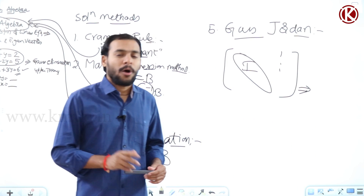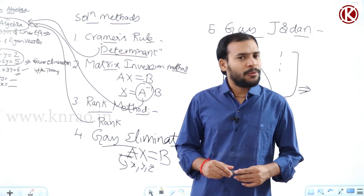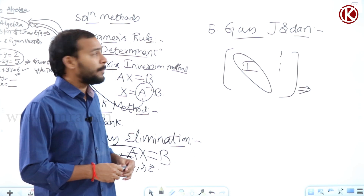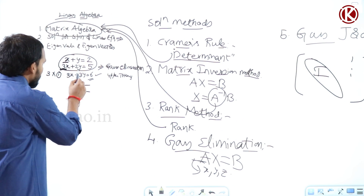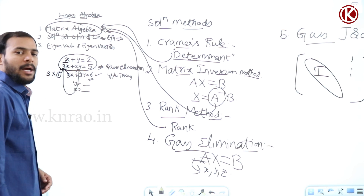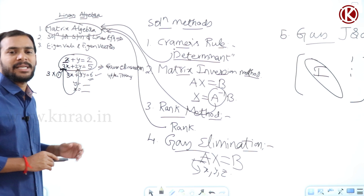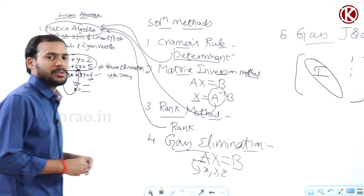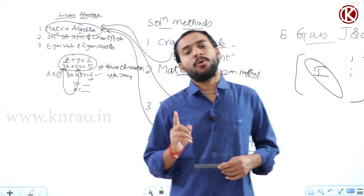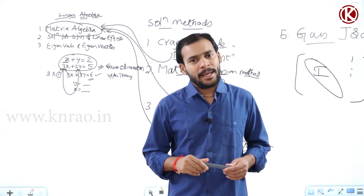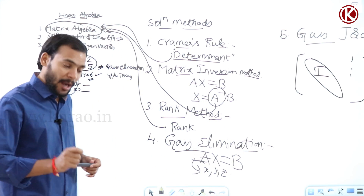In matrix algebra, we can apply both row and column operations, such as when finding determinants. However, when finding solutions for a system of linear equations, we must not perform any column operations. If we do, the coefficients of x and y get interchanged, the actual system changes, and we end up with a wrong answer. This is an important distinction to keep in mind.